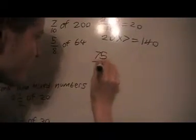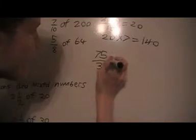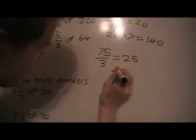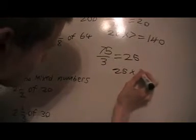Two thirds of 75. I divide 75 by 3, I get 25. I times 25 by 2, I get 50. That's the answer.